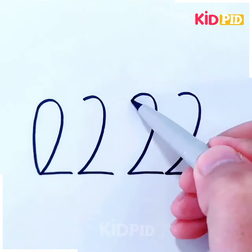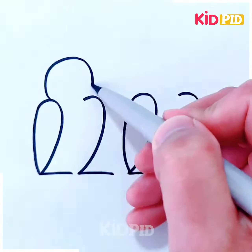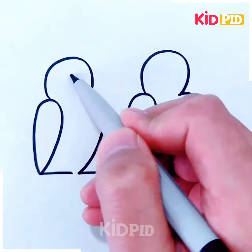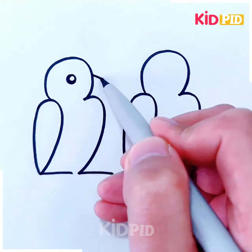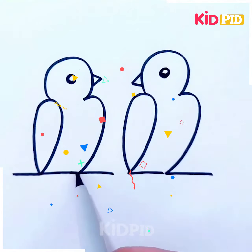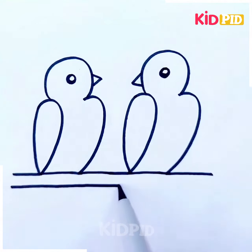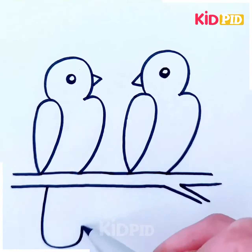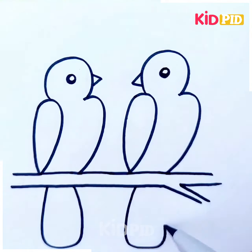Draw 2222 on the paper. Do the first and third digits one way and join the other two like this. Add in eyes and a little beak — birds in love! Draw branches at the bottom and extend the tail, then detail the tail feathers using lines and color it.